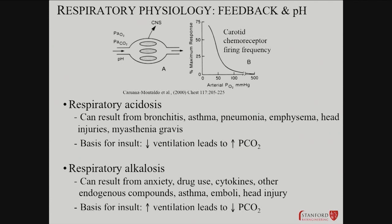Neural control issues — like neuromuscular junction disease — mean the muscles are going to be weaker no matter how hard the nervous system is trying to drive them. Your respiratory muscles — diaphragm and intercostals — are going to be weaker. On the flip side, respiratory alkalosis occurs when you're breathing too much: hyperventilation from anxiety or drug use, fever states, cytokines causing elevated respiratory rates, and head injury can also cause increased respiration. The basic problem is that increased ventilation leads to excess CO2 loss. A lot of fever and inflammatory states can end up driving elevated respiratory rates.